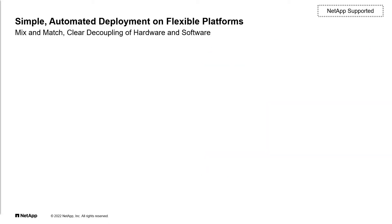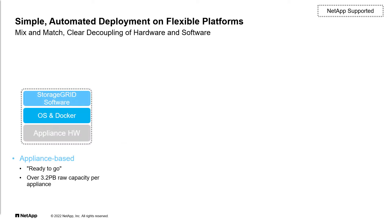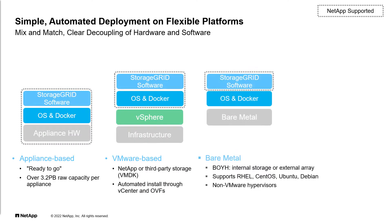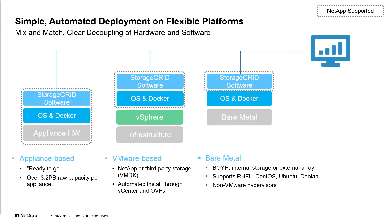StorageGRID offers a mix of deployment options from software-defined storage including virtualized or bare metal options and a variety of appliances. All these platforms can be combined in a single grid and organized by site so that the StorageGRID footprint matches the workload and the importance of that site, while still providing a unified global namespace.